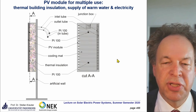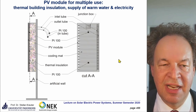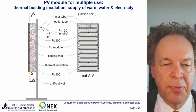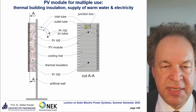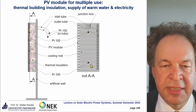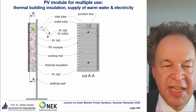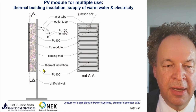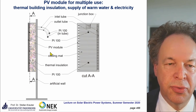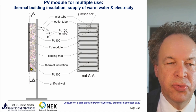Another way to reduce balance of system costs is to integrate the module into facade elements. For central European conditions, working with an Austrian facade maker, we developed a solar module equipped with a tube for warm water production, cooling the module, and heating household water. The necessary insulation required in central European facade elements anyway is integrated into one system. This results in a triple-use facade element: generating electricity, generating warm water, and providing the necessary insulation of the building.